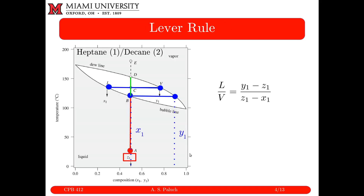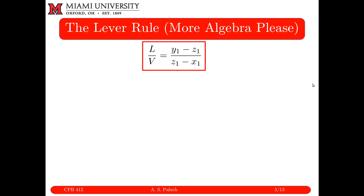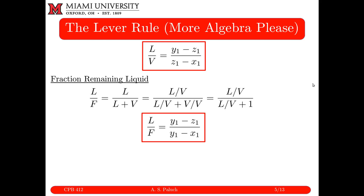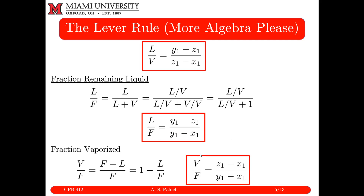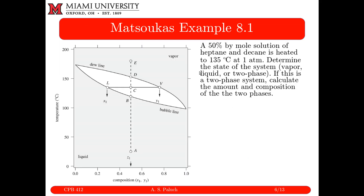From this you can also calculate the fraction remaining liquid (L/F) and the fraction vaporized (V/F). These tell you how much comes out as liquid or vapor relative to the initial feed.